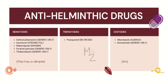Let's talk about the mnemonics and names of antihelminthic drugs. For nematodes, the mnemonic is 'Thia has a dimple.' Thia stands for thiabendazole, and dimple contains D-I-M-P: D for diethylcarbamazine, I for ivermectin, M for mebendazole, and P for pyrantel pamoate. Trematodes are treated with just one drug — praziquantel. Cestodes are treated with albendazole and niclosamide, with the mnemonic NANN.